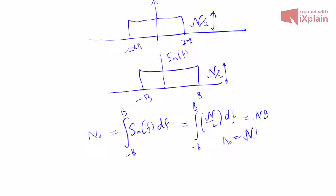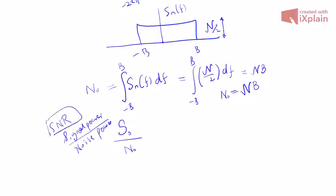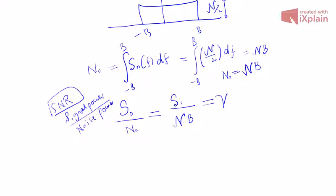Now we want to define a very important parameter — the figure of merit for most receivers — which is the signal power at the output of the receiver divided by the noise power, also called the Signal-to-Noise Ratio (SNR). This equals S_o / N₀ = S_i / (N·B), and is also denoted as γ. The SNR is a very crucial quantity in specifying any communication system.